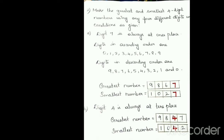Now look at the third sum: make the greatest and smallest 4-digit numbers using any 4 different digits with conditions as given. The condition here is that digit 7 is always at the 1's place. So in both the greatest and smallest numbers, digit 7 must always be at the 1's place.